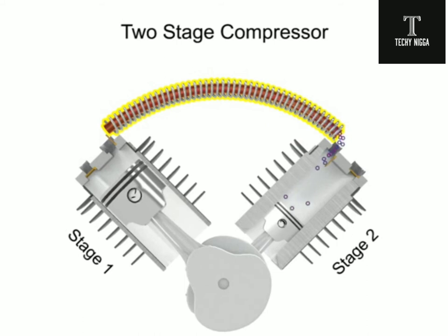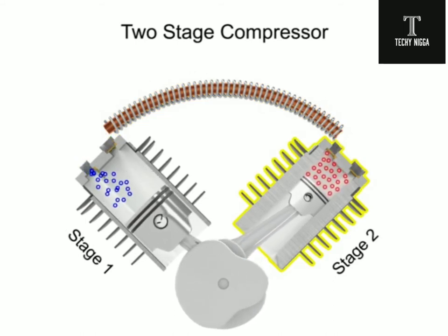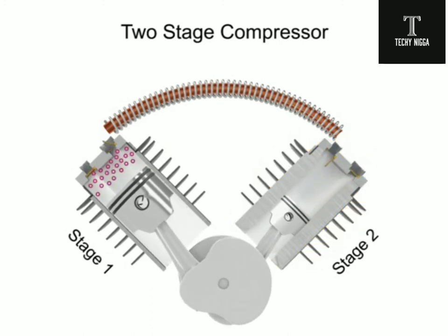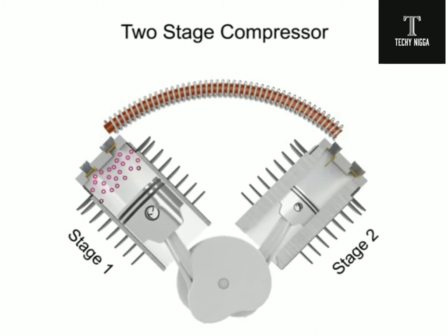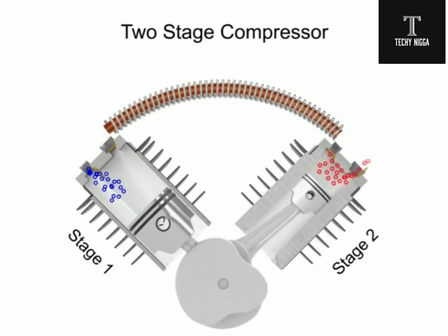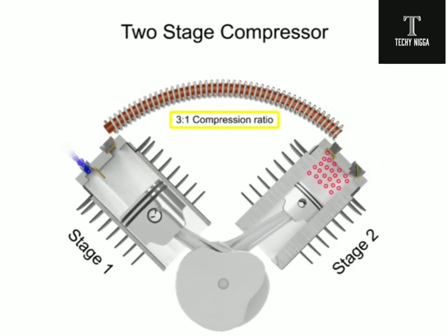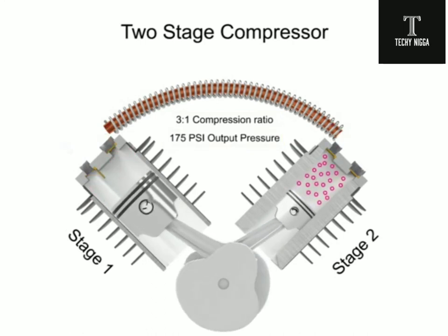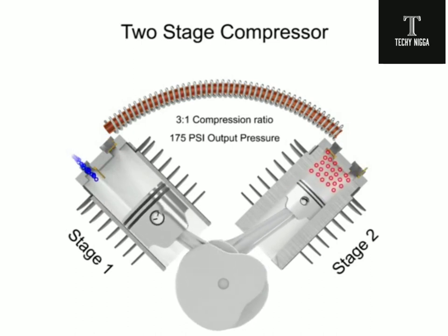After the air is cooled within the tube, the compressed air enters the second stage to be compressed even further. The compressed air entering the second stage is sometimes called supercharged air. Two-stage compressors have a compression range of 3 to 1 or even less per stage, but can operate up to 175 psi. They can also deliver more air at a higher pressure than single-stage compressors of the same horsepower.